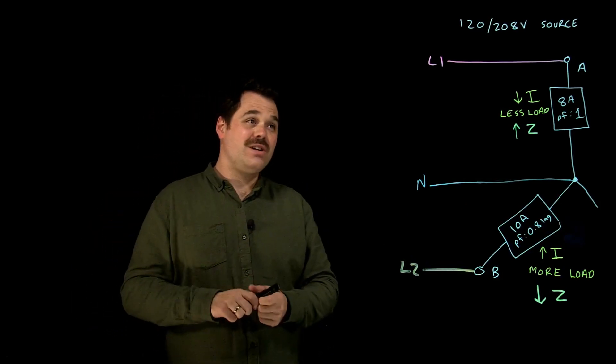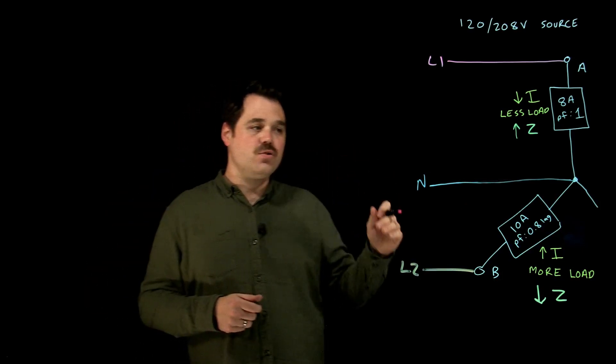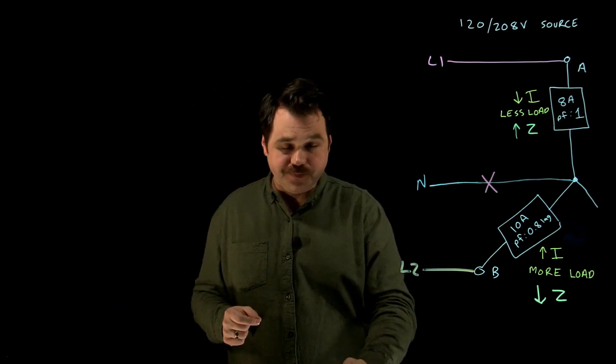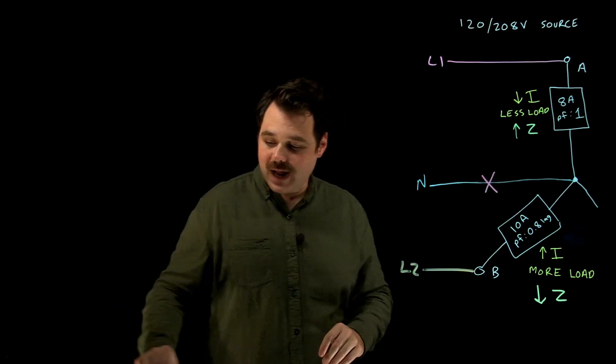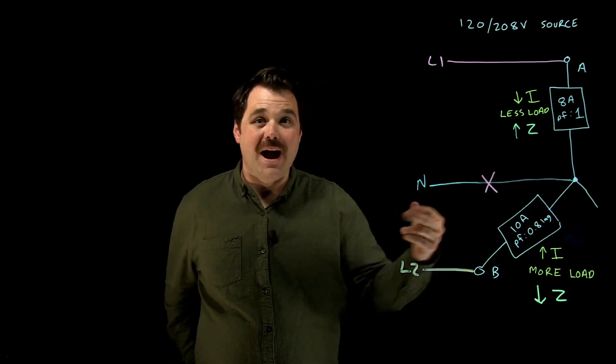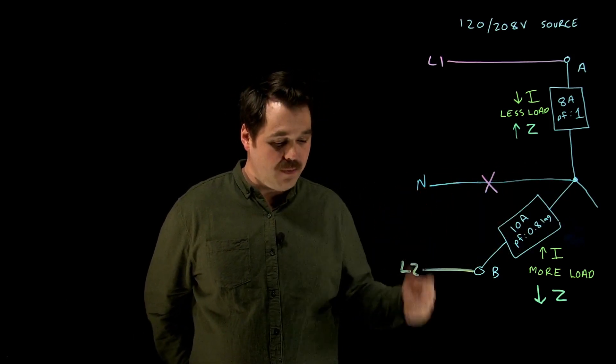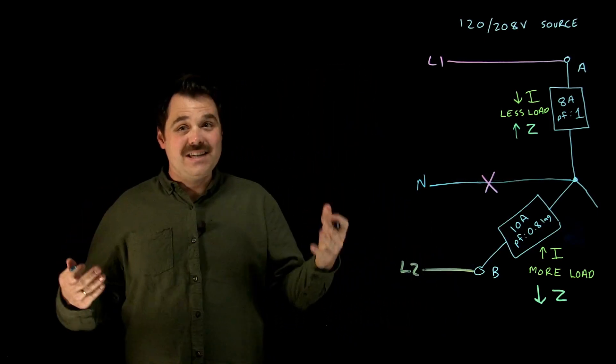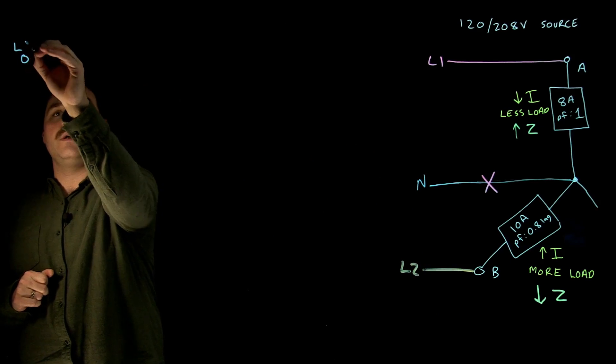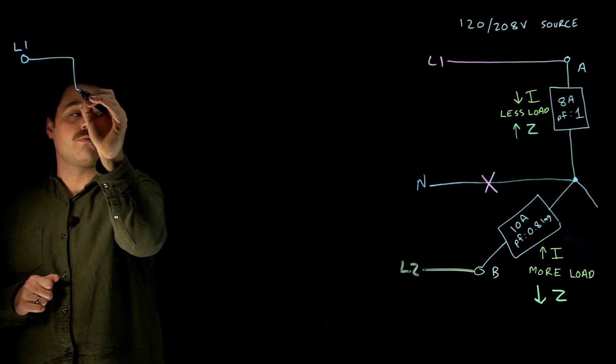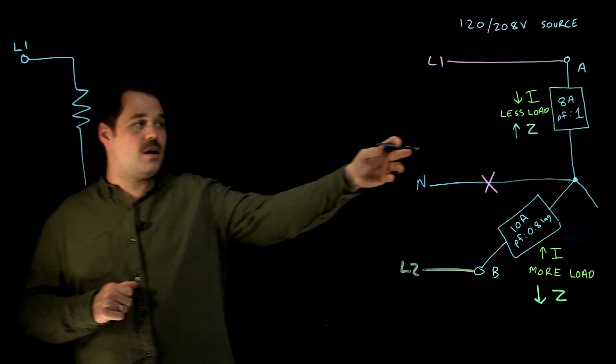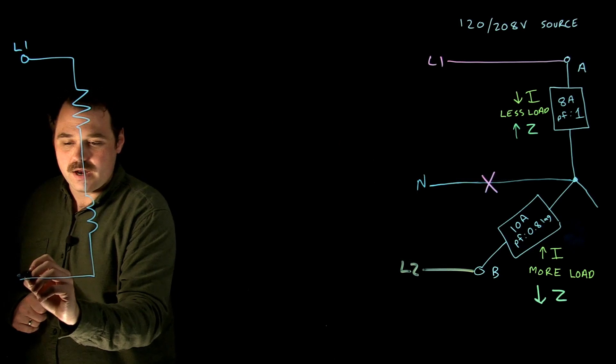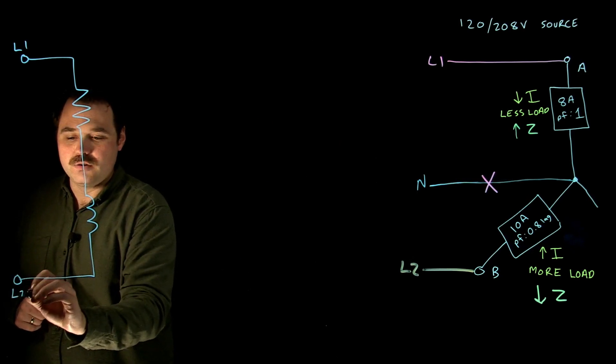So my question here is this: what happens when the neutral breaks, when I get a break on that neutral conductor? Well, effectively what happens is, because we no longer have that path for unbalanced load to travel back, we essentially develop a series circuit starting with line one, going through that resistive load with the power factor of one, and going through that inductive load back to line two.